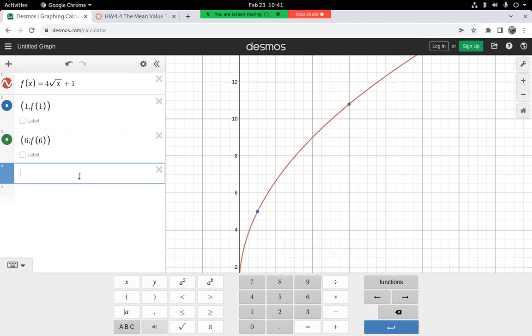And we calculated the slope for that earlier. We can just double check that here. I'm going to call that m.